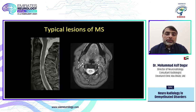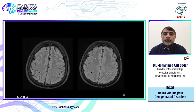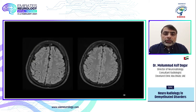On post-contrast, there can be nodular enhancement or incomplete ring enhancement, which is more specific for demyelinating disorders. In the spine, lesions are usually small — less than one vertebral body length. On gradient echo images, they involve the white matter.